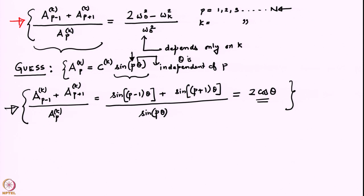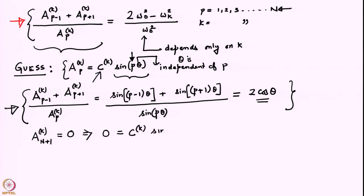To find θ we will have to use the boundary conditions. The leftmost boundary condition — that the 0th mass is fixed — is automatically satisfied by our choice of sin(p·θ): if we put p equal to 0, this is automatically taken care of. We have to explicitly satisfy the right boundary condition, which is that when p equals N+1, the displacement should be 0. So in any mode of vibration, the rightmost point always remains stationary. Substituting p = N+1, we get 0 = C_k · sin((N+1)θ).